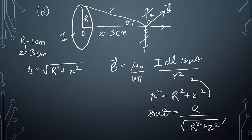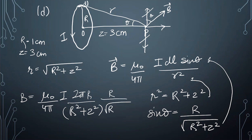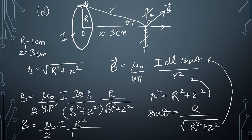Substituting, sine theta equals R perpendicular over hypotenuse, which is R over root of R squared plus Z squared. After integrating dL over the full circumference 2 pi R and simplifying, the expression for the magnetic field on the axis becomes B equals mu-naught I R squared over 2 times (R squared plus Z squared) to the power 3 by 2. This is the standard expression we will use.